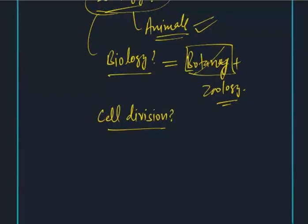Equational divisions — it's mitosis. Mitosis is an equational division. We call it equational division because the chromosomal number of the mother cell and the daughter cell remains the same. For example, if I am having a cell whose chromosome number is 23 pairs, and if I get the daughter cell which is also consisting of 23 pairs of chromosomes, then I'll call it mitosis, as equational division.